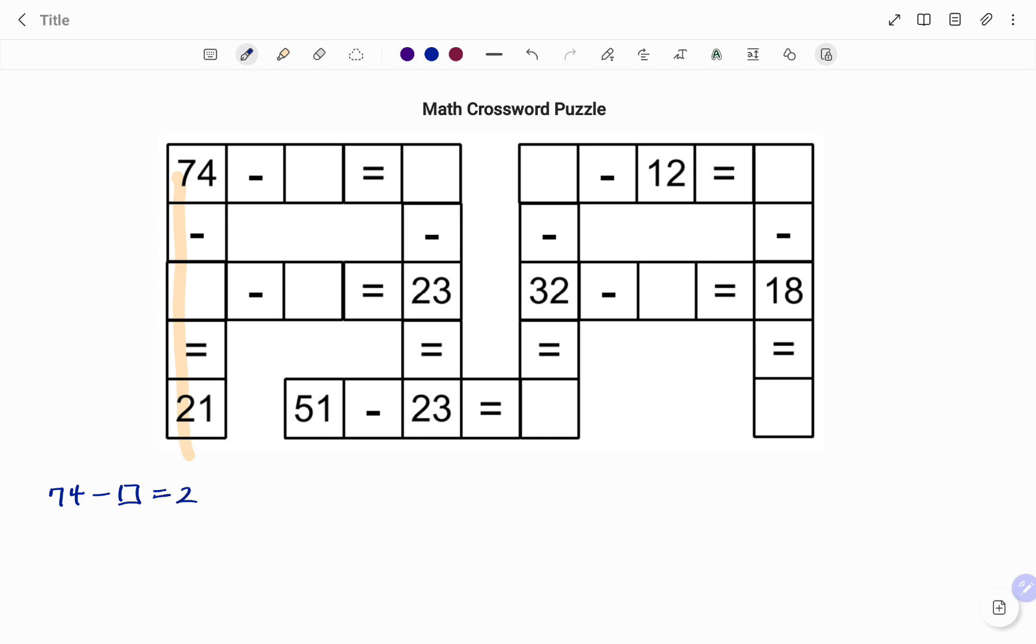So therefore to find the content of my box, I have 74 takeaway 21. 4 minus 1 is 3, 7 minus 2 is 5. So that means that 74 minus 53 will give you 21.